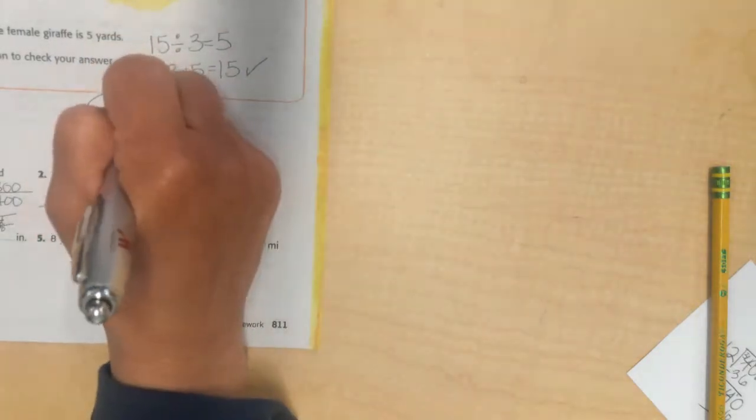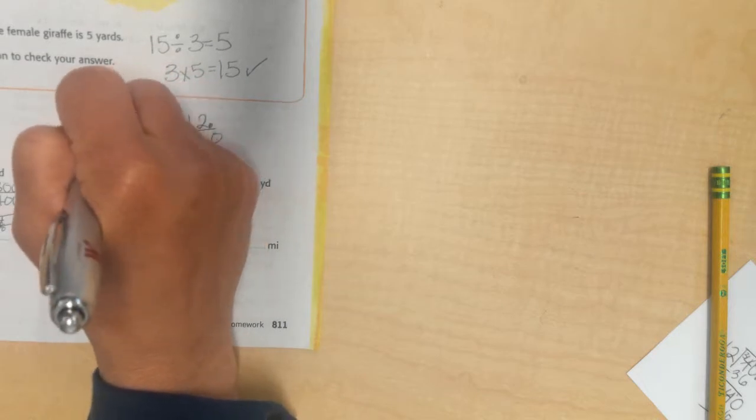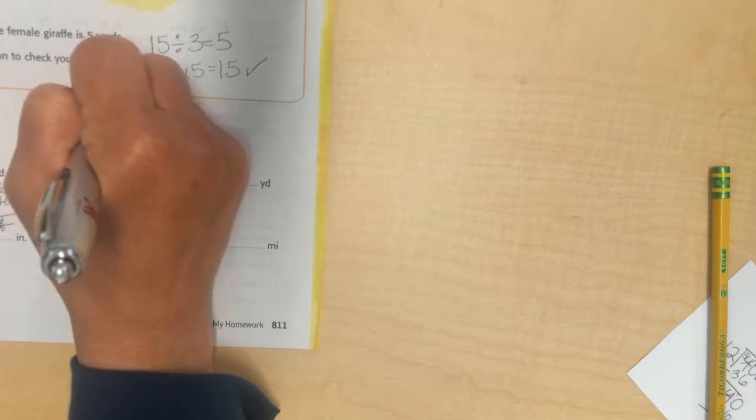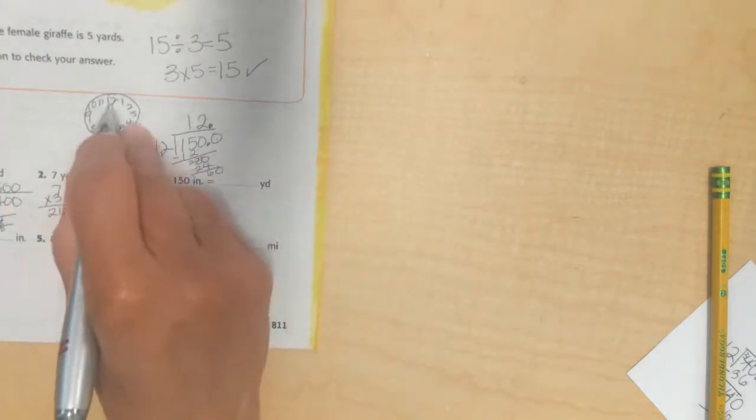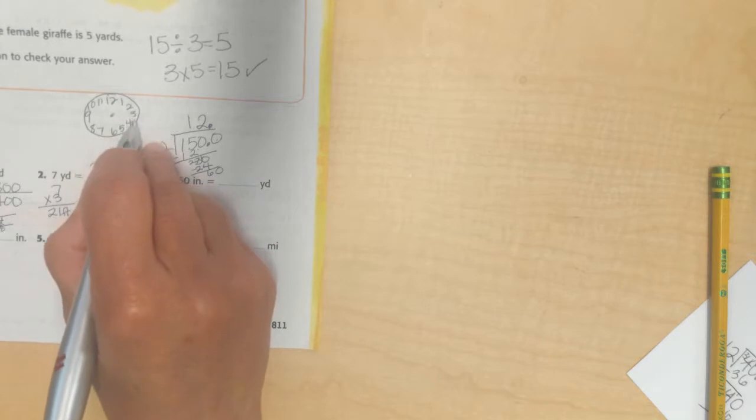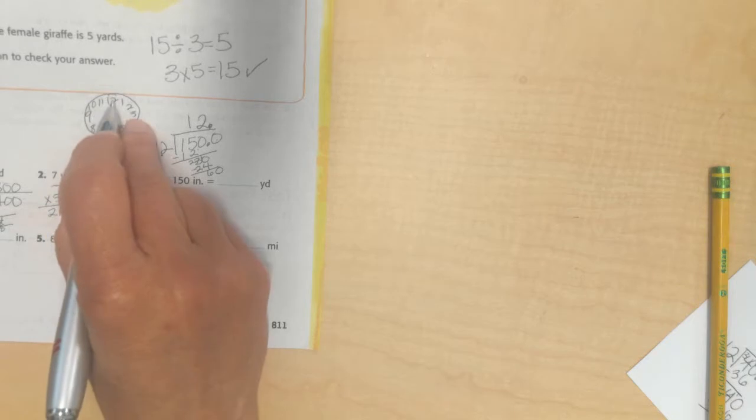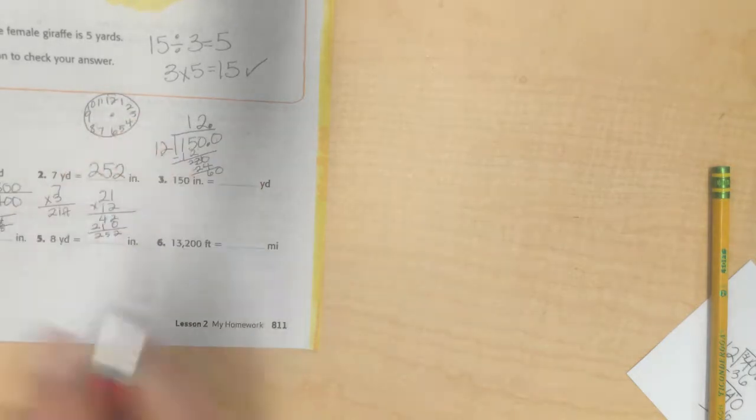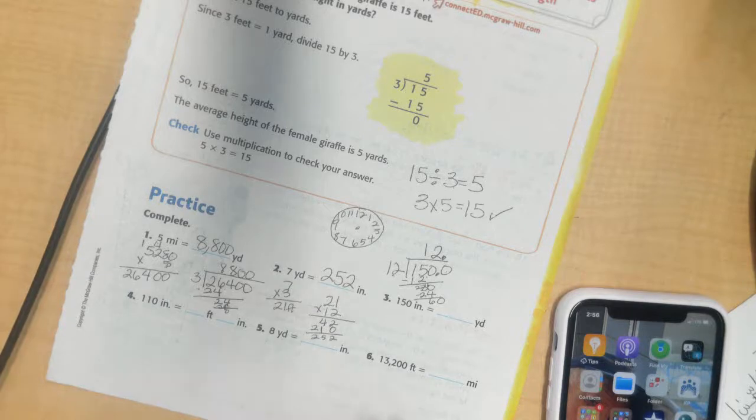It helps me memorize 12's times. I have 1, 2, 3, 4, 5, 6, 7, 8, 9, 10, 11, 12. And if I count by 5's, there's 60 minutes in an hour. 5, 10, 15, 20, 25, 30, 35, 40, 45, 50, 55, 60.